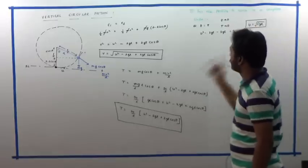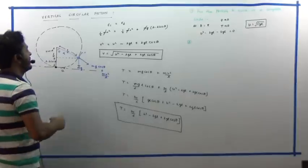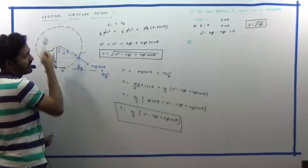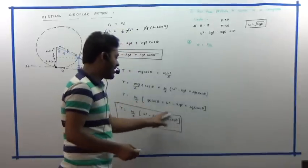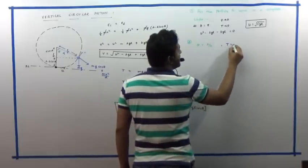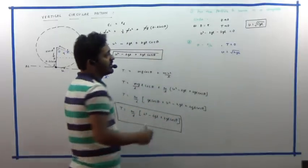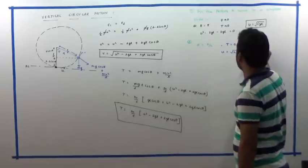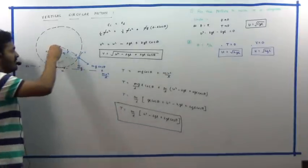For the boundary case where the particle swings to θ = 90° and returns — oscillating back and forth — we set θ = π/2, so the cosθ term vanishes. Setting T = 0 at that point gives u = √(2gL). The same result is obtained by setting velocity to zero at θ = 180° in the velocity equation. So u = √(2gL) is the condition for the particle to reach exactly 90° on each side.